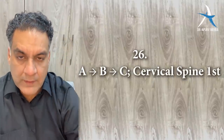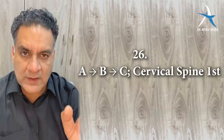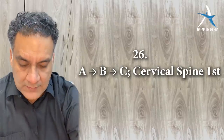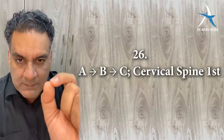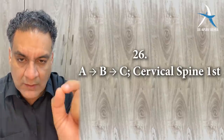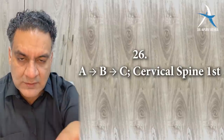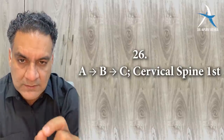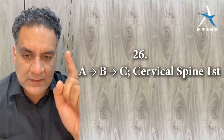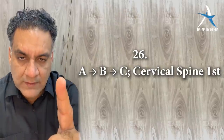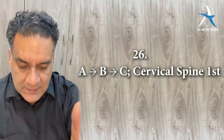Point number twenty-six: ABC is the order of resuscitation of a trauma patient, but stabilize the cervical spine first. Stabilize the cervical spine first.